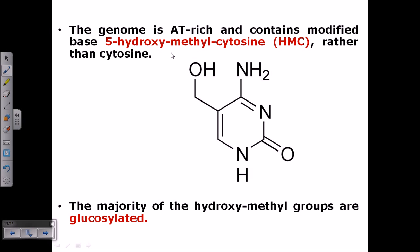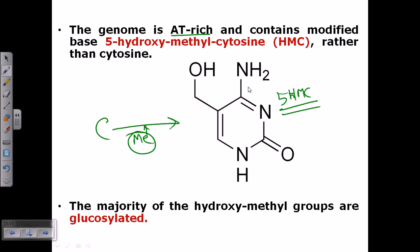The T4 phage genome is AT-rich in nature and contains modified bases — specifically 5-hydroxymethylcytosine (5-HMC) instead of regular cytosine. After methylation, cytosine becomes 5-hydroxymethylcytosine, and the majority of these hydroxymethyl groups are glucosylated. Being AT-rich allows replication to start from many positions since it is easier to separate the strands. The modified bases help protect the phage against host cell defense activities.